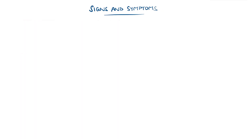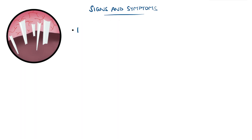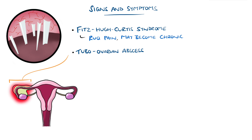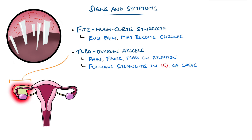In Fitzhugh-Curtis syndrome, there may be right upper quadrant pain, and episodes may become chronic with intermittent episodes of PID or pain. A tubo-ovarian abscess is a collection of pus within the adnexa, which can result in pain and fever, as well as potentially peritonitis and sepsis. This tends to follow salpingitis — meaning inflammation of the fallopian tubes — in around 15% of cases, and there may be a mass on palpation.